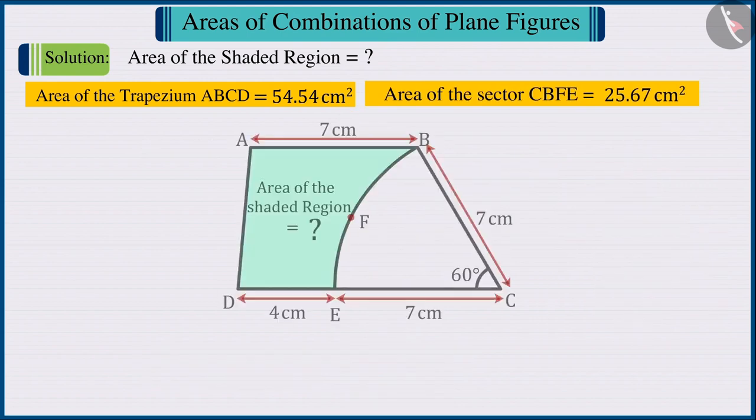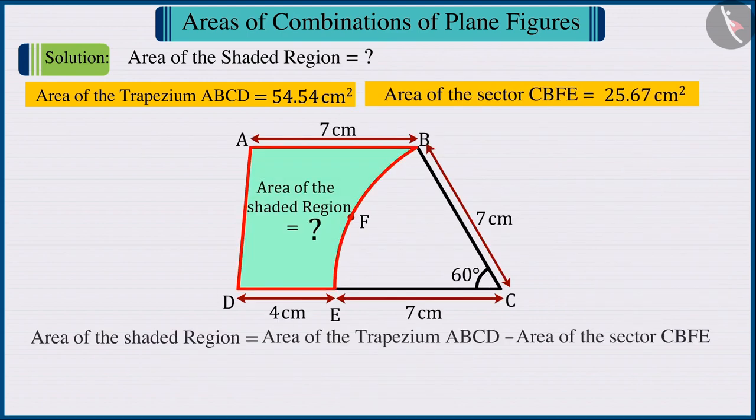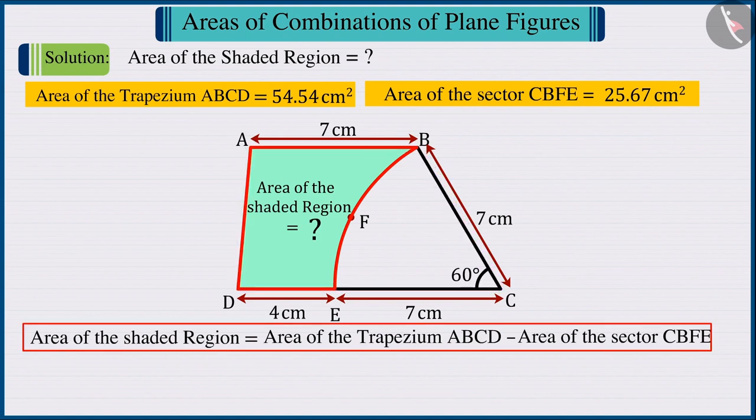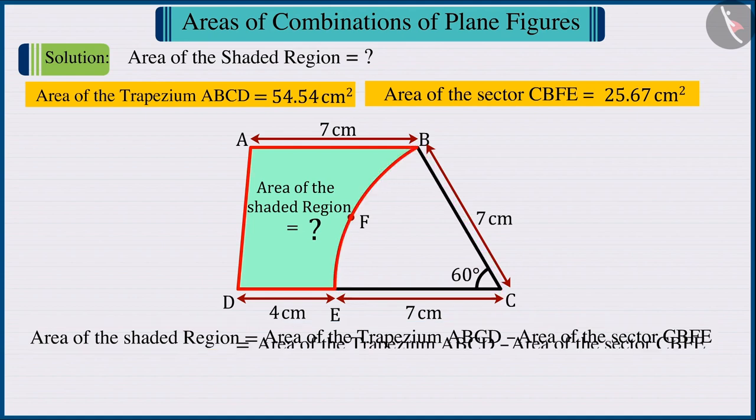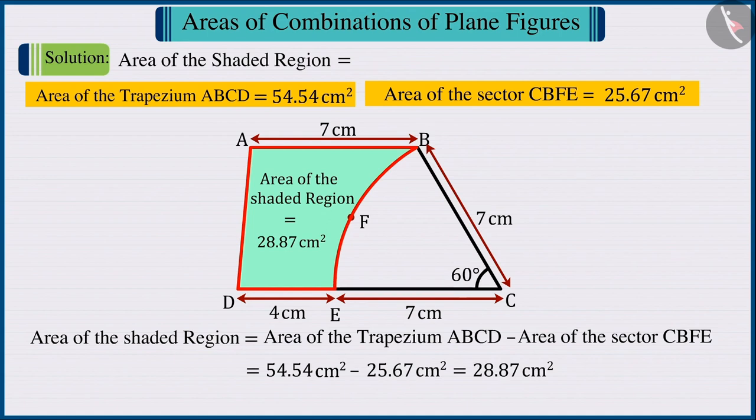Since we have to find the value of the area of the shaded region, we subtract the area of the sector from the area of the trapezium. The area of the shaded region is obtained as 28.87 cm².